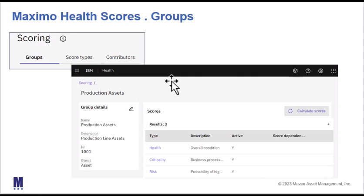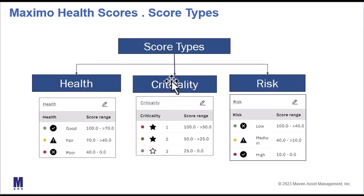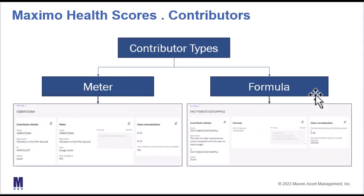We then move into score types, which are configurable based on the three components of health, criticality, and risk. Contributors is where we spend the most time setting up formulas and components. The two contributor types are meter and formula. A meter can be brought in directly from Maximo Manage, and we can also use condition monitoring points in Maximo Manage to define the good and not-so-good limits for a meter.